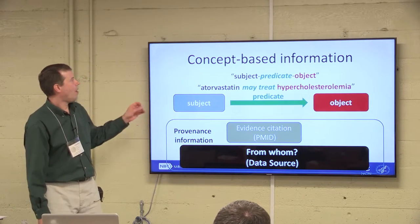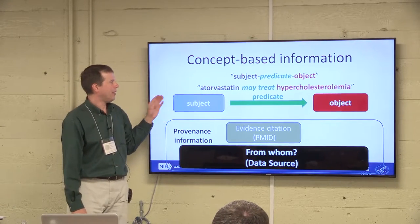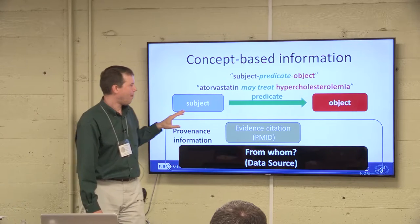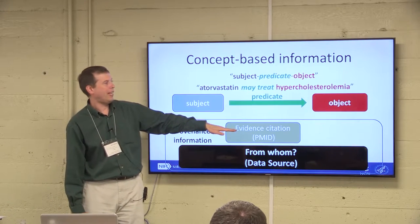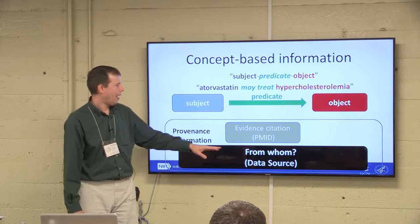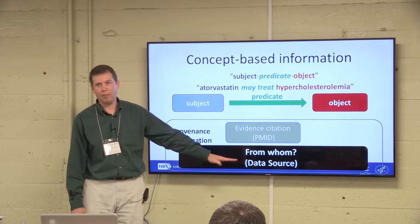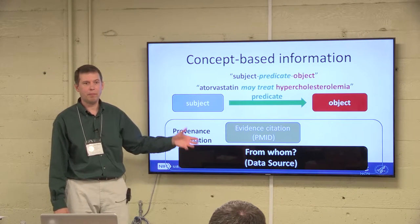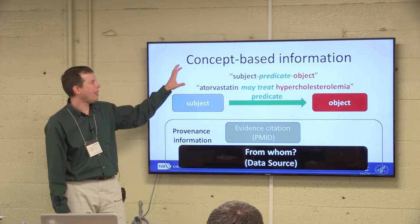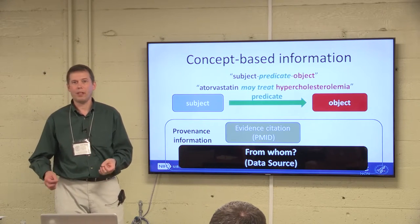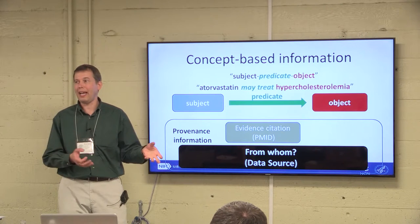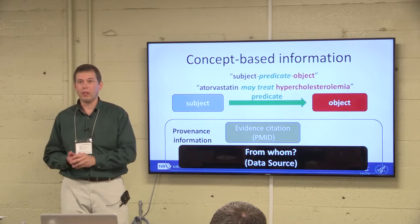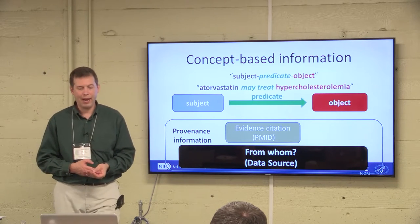We've been trying to help by using triples — directed graphs — to represent knowledge. But the big thing for us isn't just the triple; it's the provenance. What was the citation that supports this statement, and where did they get that information from? We maintain double provenance where most people just have single. We've got to figure out who's making the assertions, and we're very interested in how it changes over time. You might notice a chemical-gene link from the 1980s that disappears in the 1990s and reappears in the 2000s.